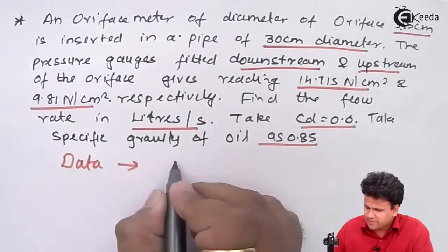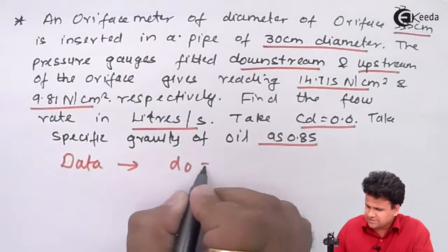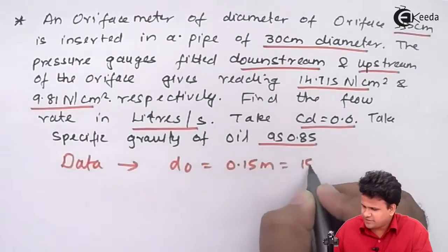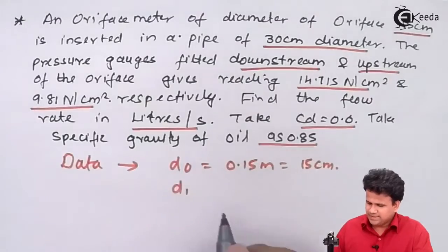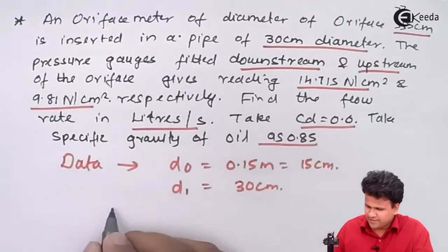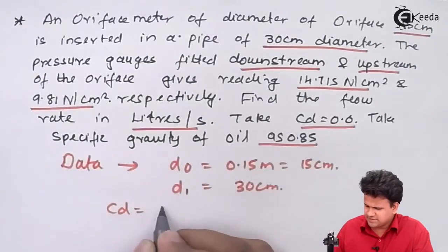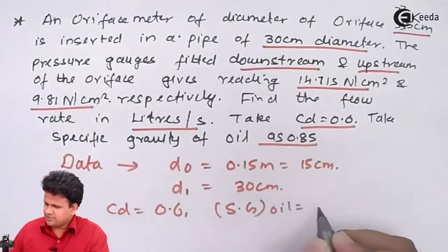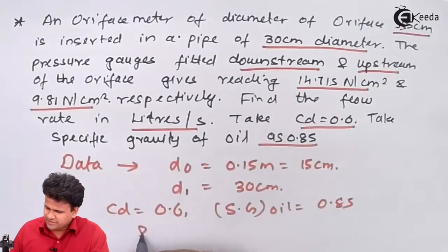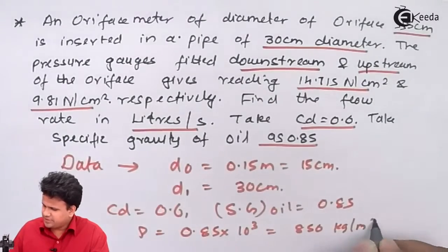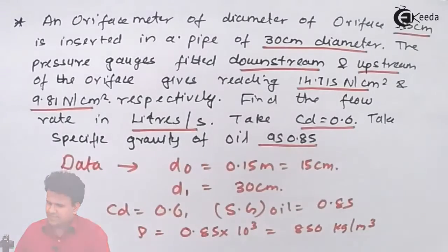The data given: diameter of the orifice d0 is 0.15 meters or 15 centimeters, diameter of the pipe d1 is 30 centimeters, coefficient of discharge Cd is 0.6, and the specific gravity of oil is 0.85. Therefore, the density of oil is 0.85 × 1000 = 850 kg per meter cube.